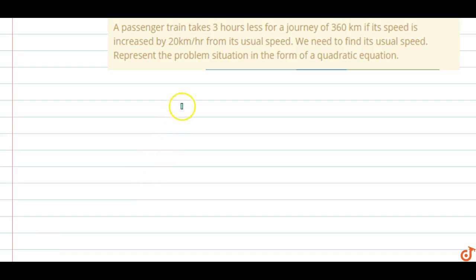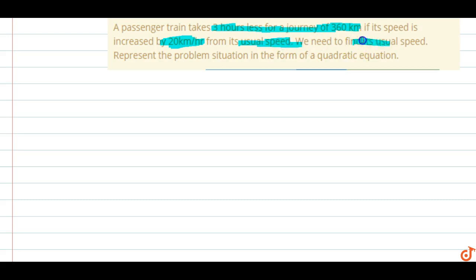In this question, a passenger train takes 3 hours less for a journey of 360 km if its speed is increased by 20 km per hour from its usual speed. We need to find its usual speed and represent the problem situation in the form of a quadratic equation.